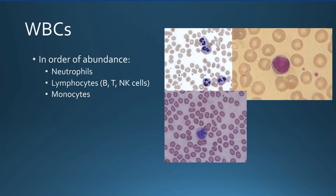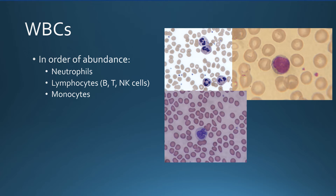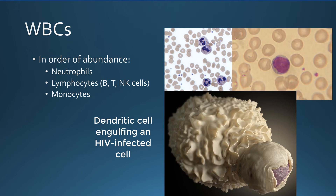Some monocytes mature into dendritic cells, which are sentinel cells. Instead of traveling throughout the body, they wait in the skin and mucous membranes. Upon invasion by microbes, they activate, become phagocytic, engulf pathogens, and then travel to a nearby lymph node where they act as antigen-presenting cells.